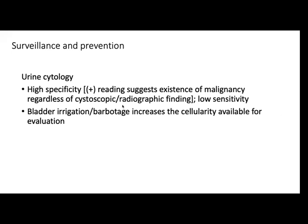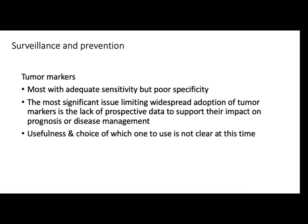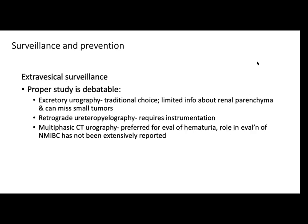Urine cytology has high specificity — a positive reading suggests existence of malignancy, and some books state that a positive urine cytology suggests high-grade disease. Bladder irrigation and barbotage increases the cellularity available for evaluation; however, false positive results can occur from mechanical trauma and contrast media. Tumor markers are not proven advantageous at this time. Extravesical surveillance is still debatable, but imaging such as ultrasound or CT scan is prudent.